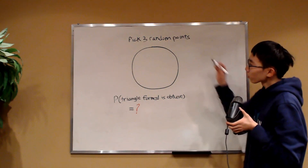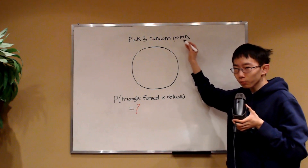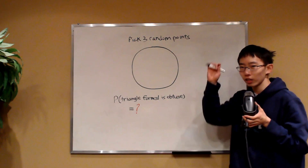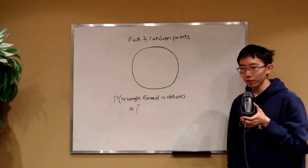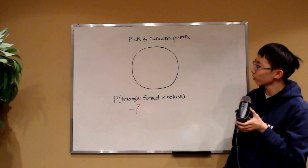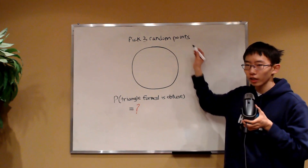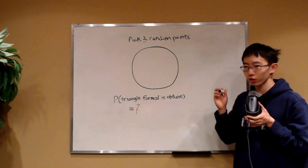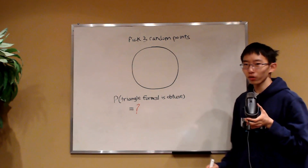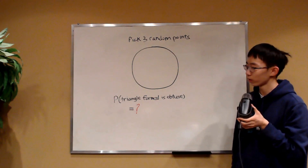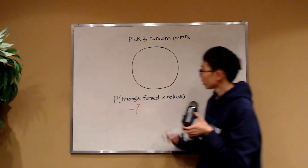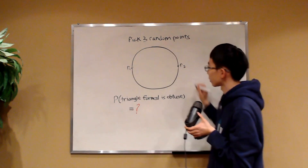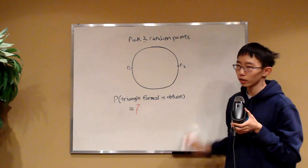Three random points — that's not very pleasant to think about. It's not really easy to think about as they vary. So what if we only had one to worry about? Let's first think about fixing the first two points and just letting the third one vary. But where do we even fix the first two? We're going to consider a very special placement: what if the first two points were fixed to be diametrically opposite, meaning that they form a diameter?